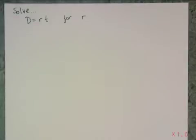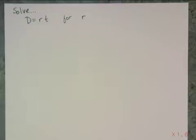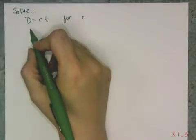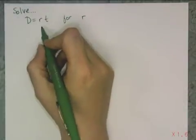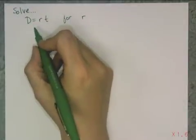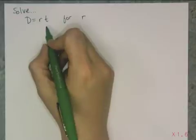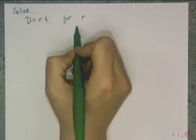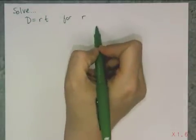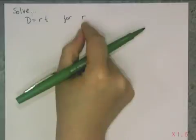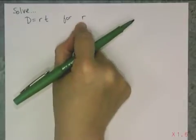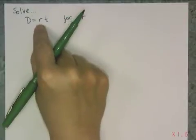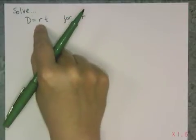We're going to look at the most fundamental relationship in algebra: the formula for distance in terms of rate and time. This says distance equals rate times time. When I ask you to solve a formula for a specific variable, that means I want you to get that variable by itself — so I want to get r by itself.